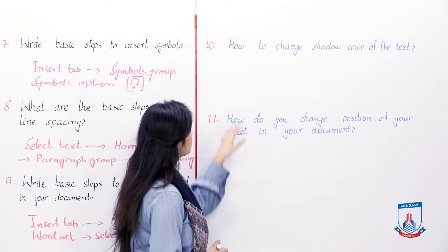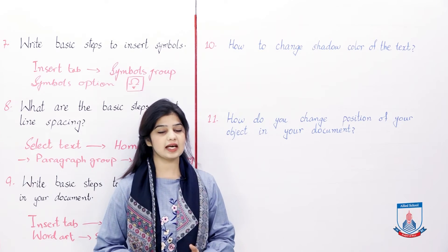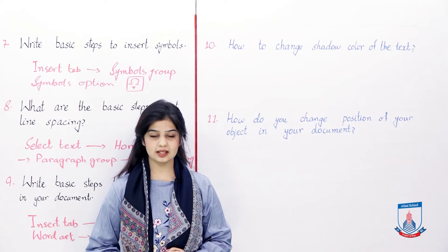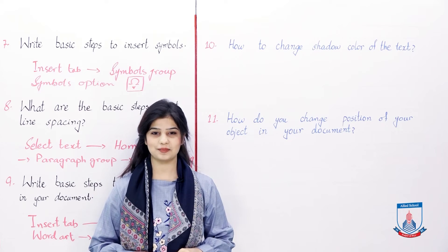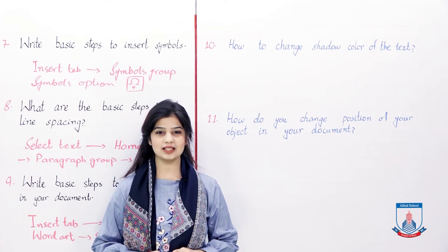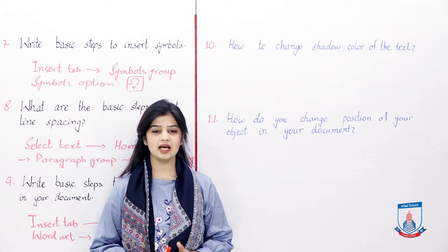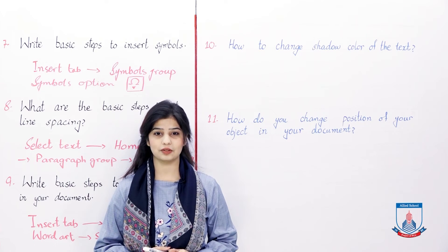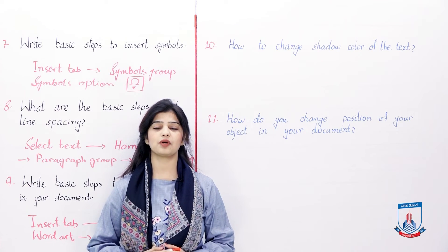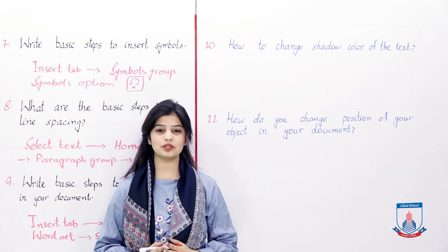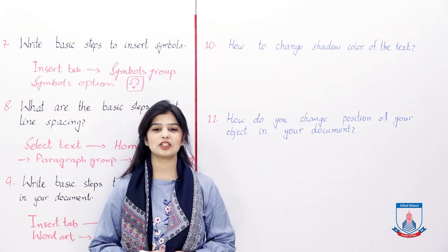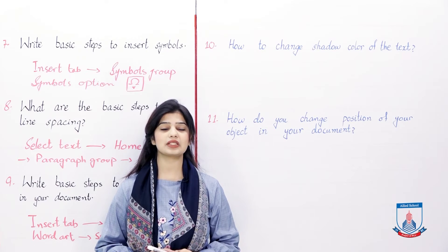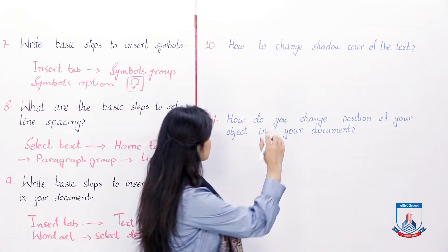Question 10: how to change the shadow color of text? Students, through Word Art you insert different text styles, and on those styles you can apply a shadow and change its color. First, select the Word Art text. When you select it, a Format tab appears in the tab bar. In the Format tab, under the Shape Styles group, there is a Shape Effects option.